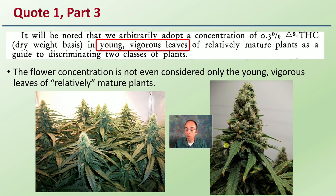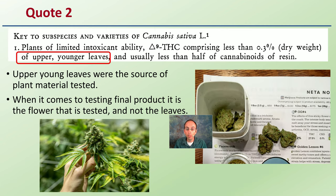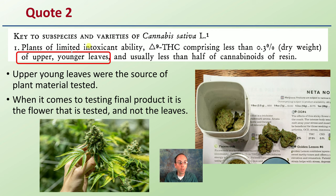There's some uncertainty about what degree of maturity they're referring to, and there are distinct visual differences. The key part is that they were looking at the vigorous leaves for THC content, not the actual flower. Those young upper leaves are the source of plant material tested. When it comes to testing final product nowadays, the final product being tested is the dry flower, not the leaves. So we're basing our information on an article that was testing the leaves, not the actual flower.